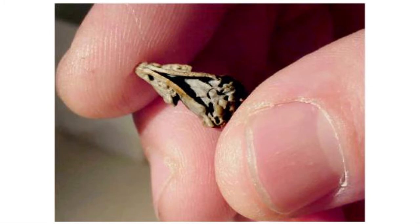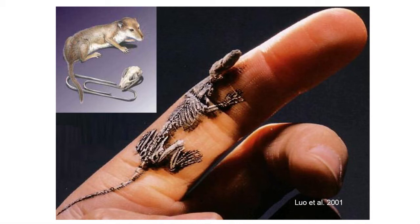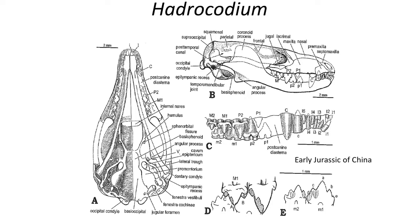The first is a really tiny little fossil mammal, Hydrocodium from the early Jurassic of China. The skull of Hydrocodium measures only 12 millimeters — about a centimeter — which makes it one of the smallest mammals ever known. Hydrocodium was about the size of a paper clip, but it is very important in understanding the evolution of mammals.